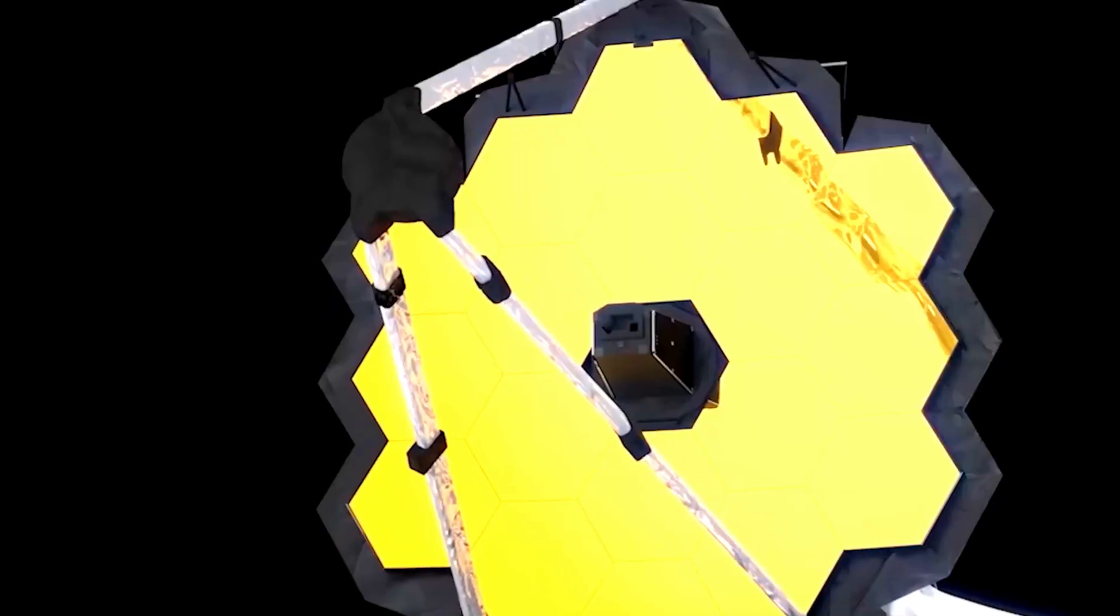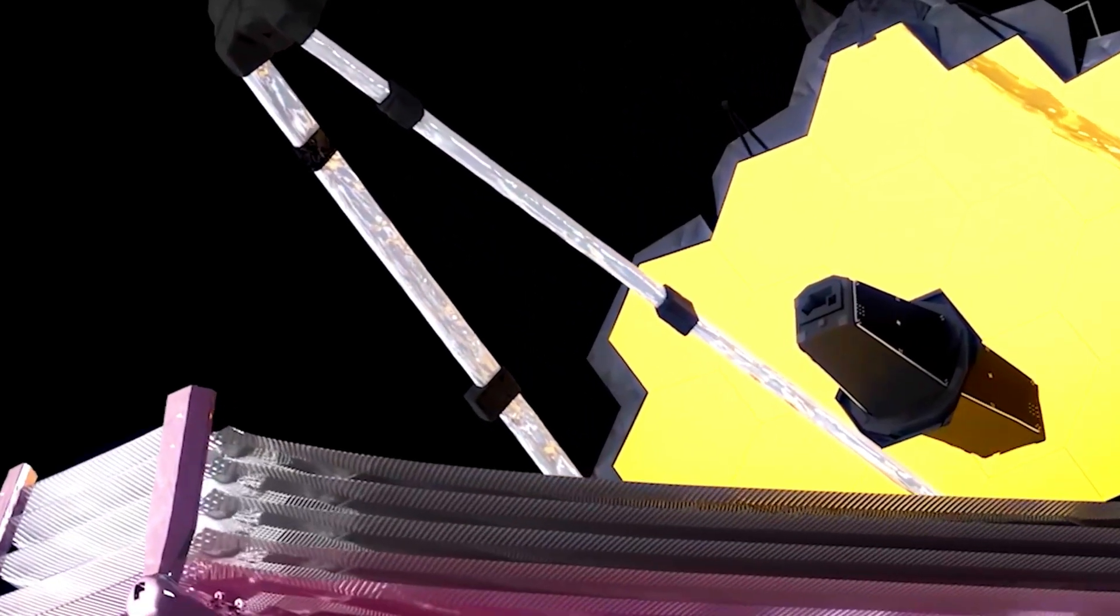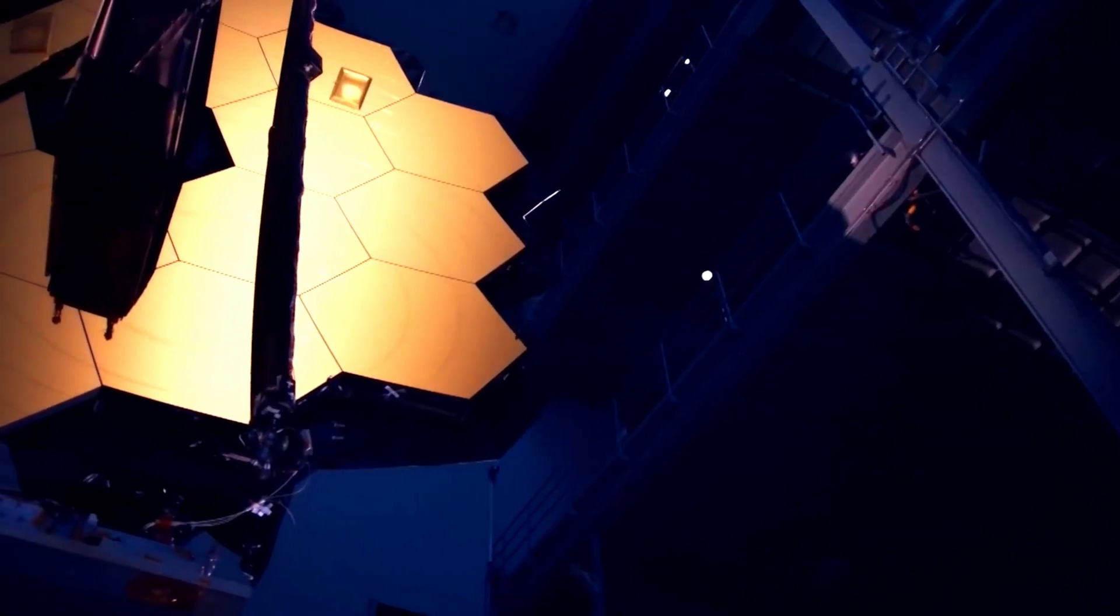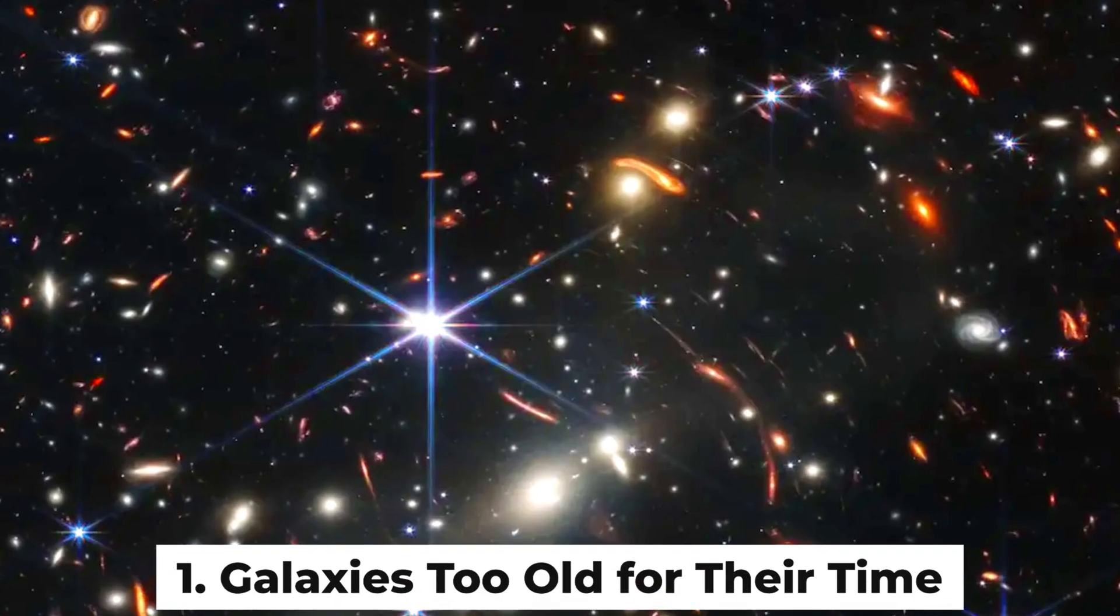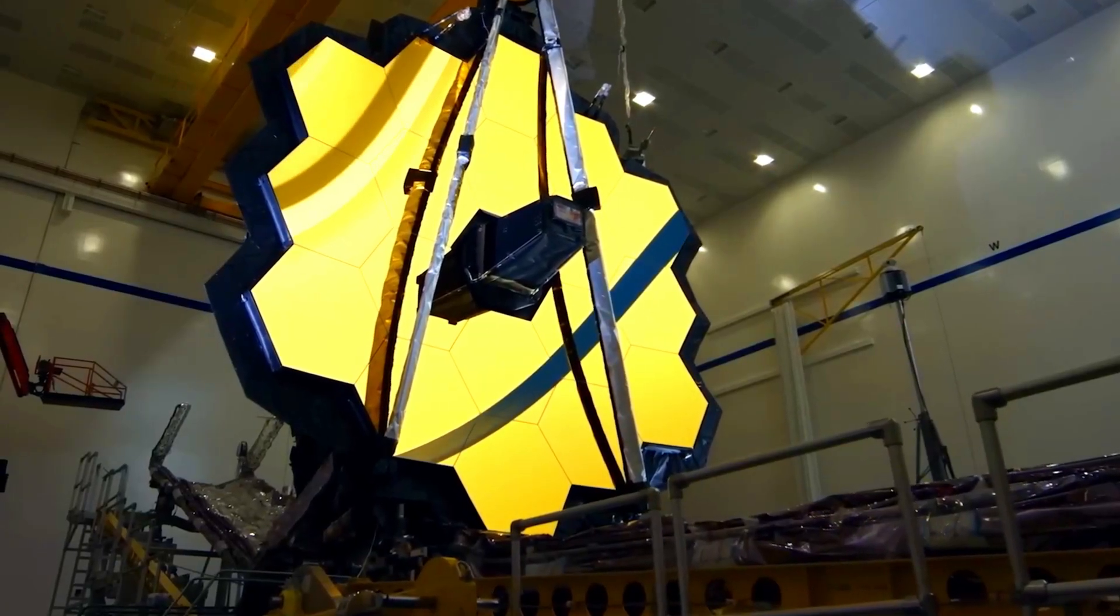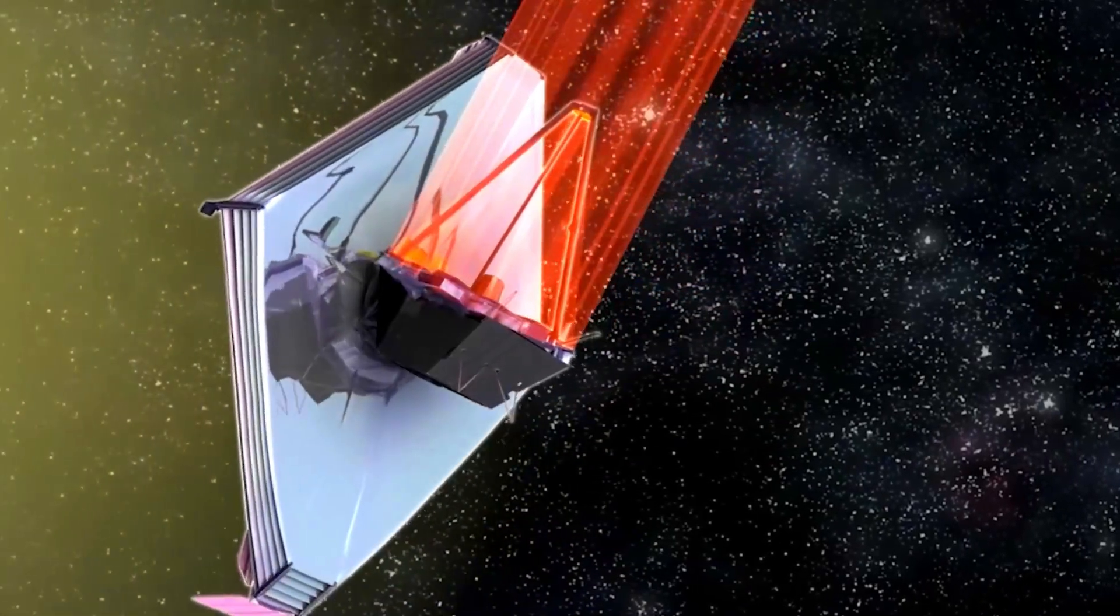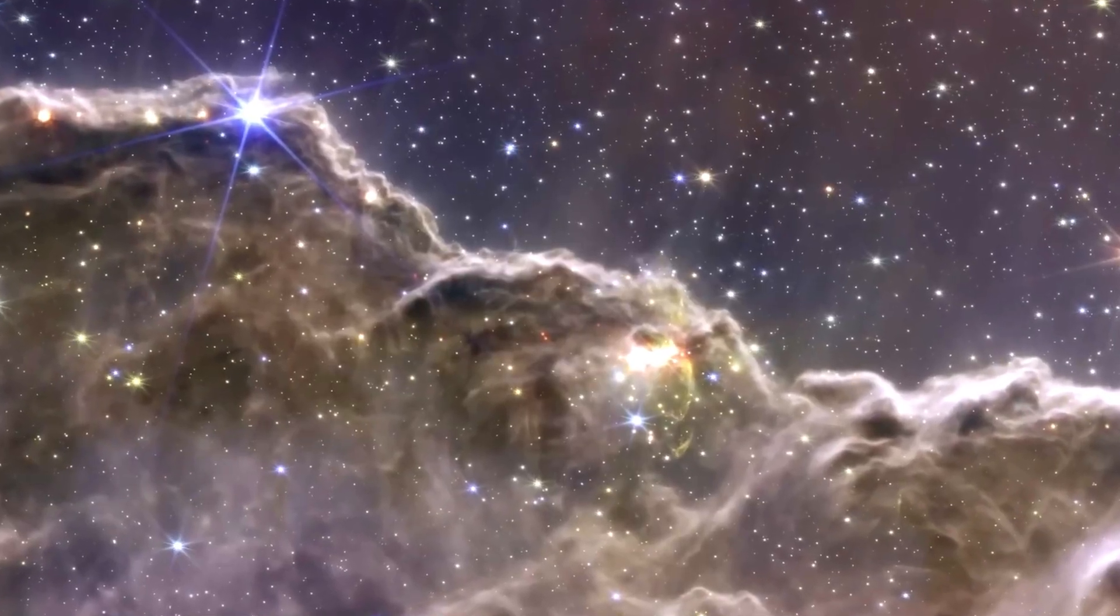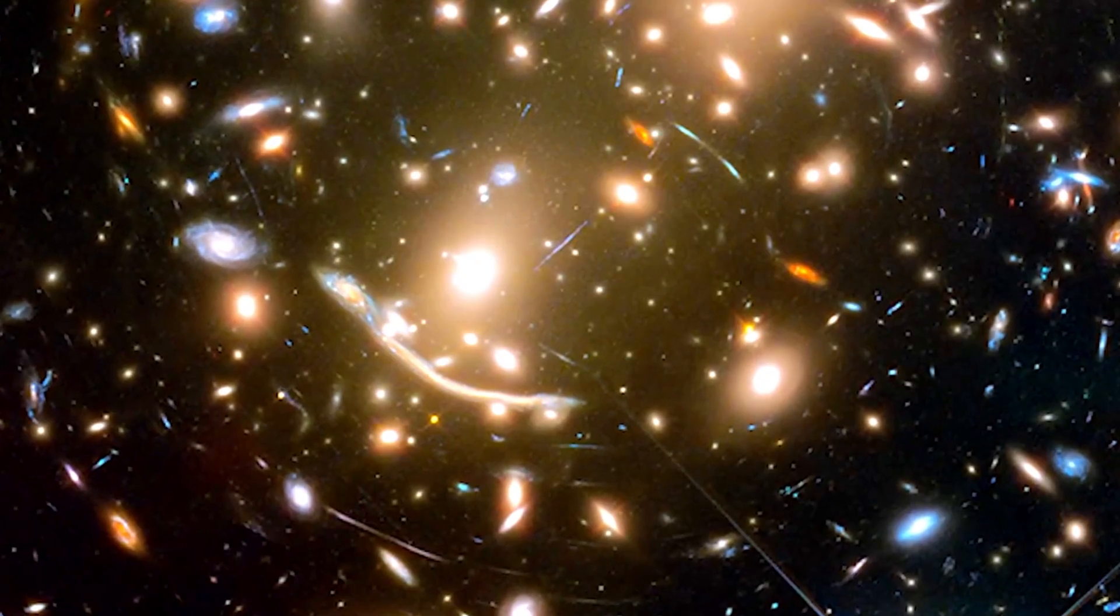Let's take a journey through six of the most jaw-dropping discoveries this mighty eye in the sky has gifted humanity, discoveries that stretch from the birth cries of the cosmos to the possibility of alien life. Galaxies too old for their time: JWST's first major shocker came when it peered into the early universe and found something that shouldn't be there—massive, mature galaxies just 300 million years after the Big Bang.